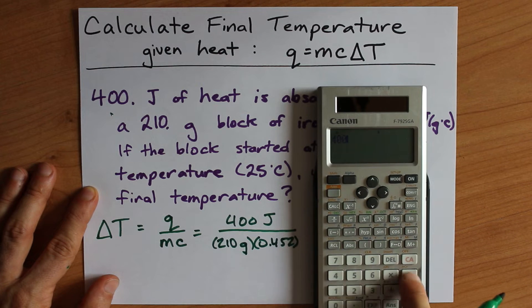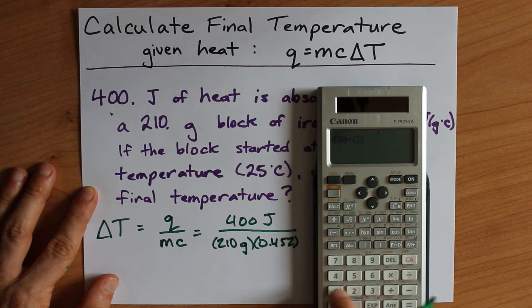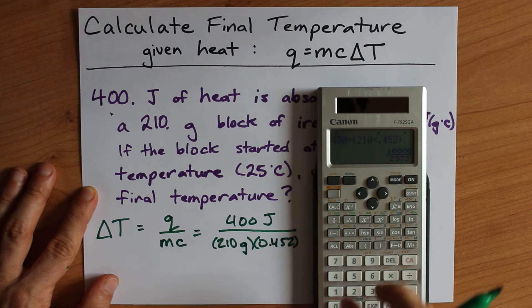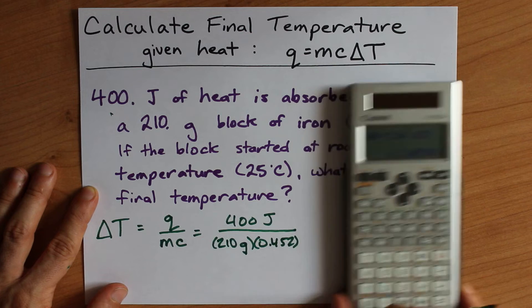we're going to type 400 divided by open bracket, 210 times 0.452. That gives me 4.21,